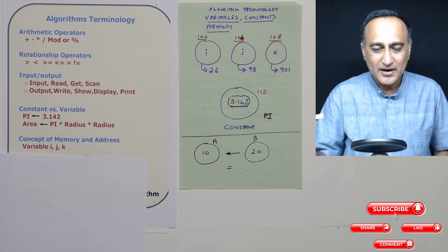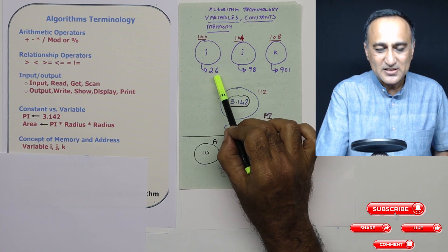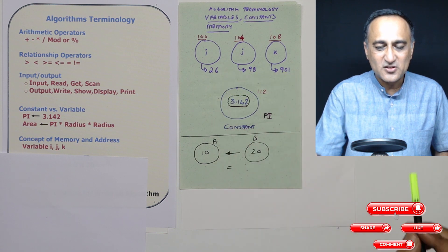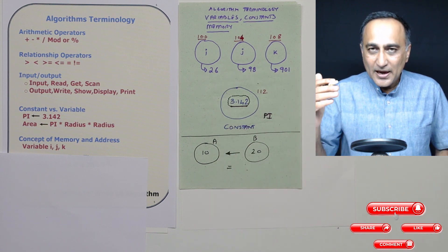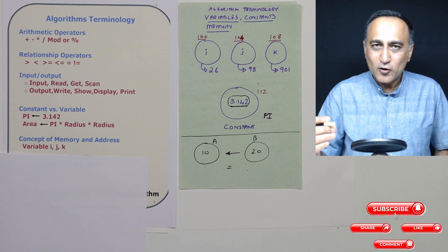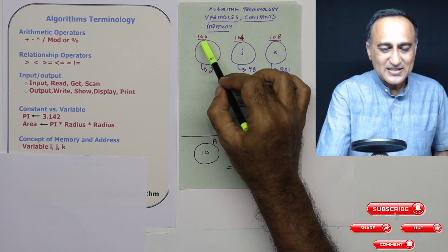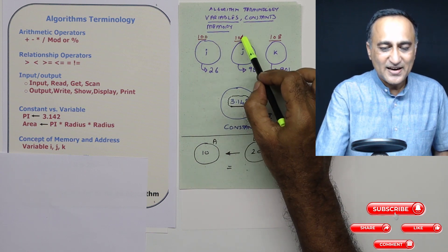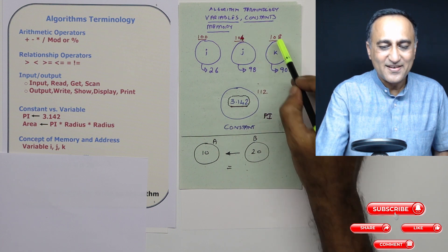Every memory location in a computer also has an address. For example, I has an address 100, J has the address 104, and K has the address 108.